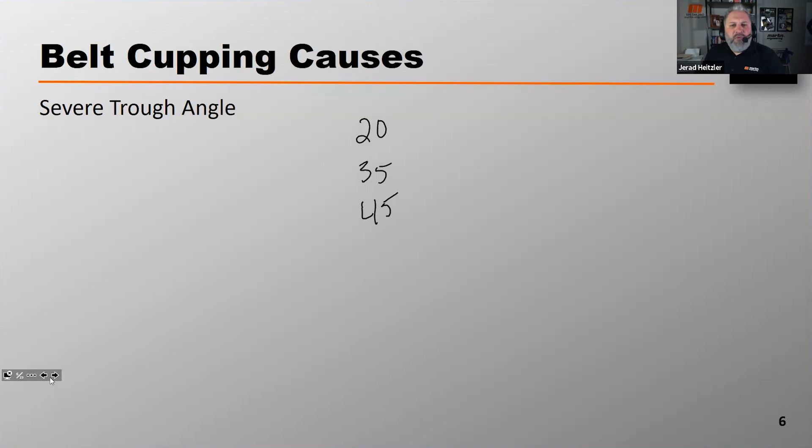However, belts that are manufactured or used in markets other than the U.S. are sometimes designed for different trough angles. The troughing angles outside of the U.S. and Canada are 20, 25, 30, 35, 40, and 45.